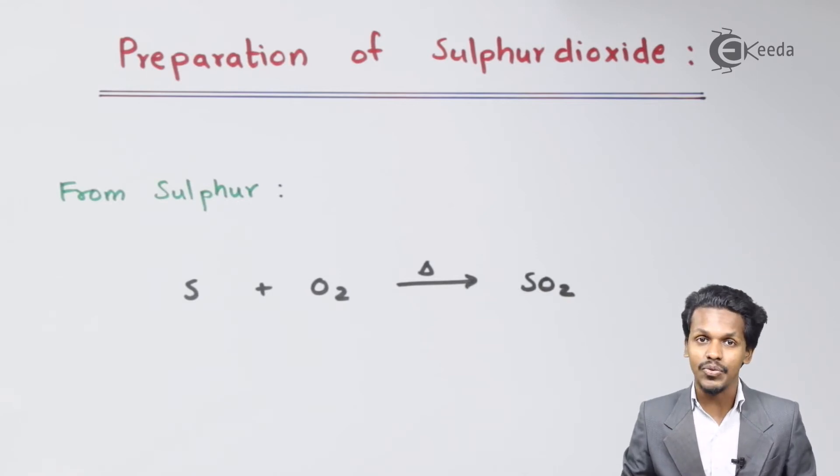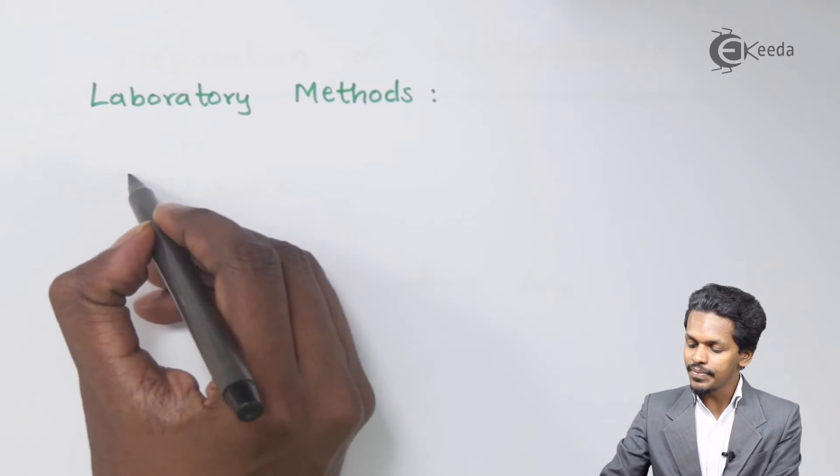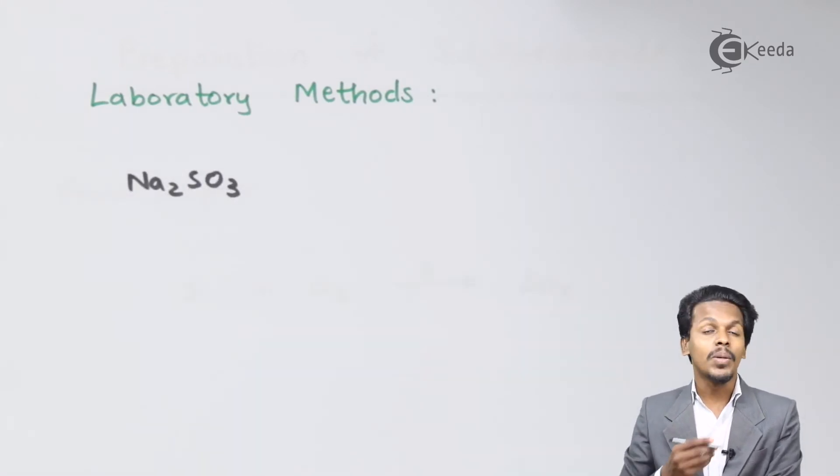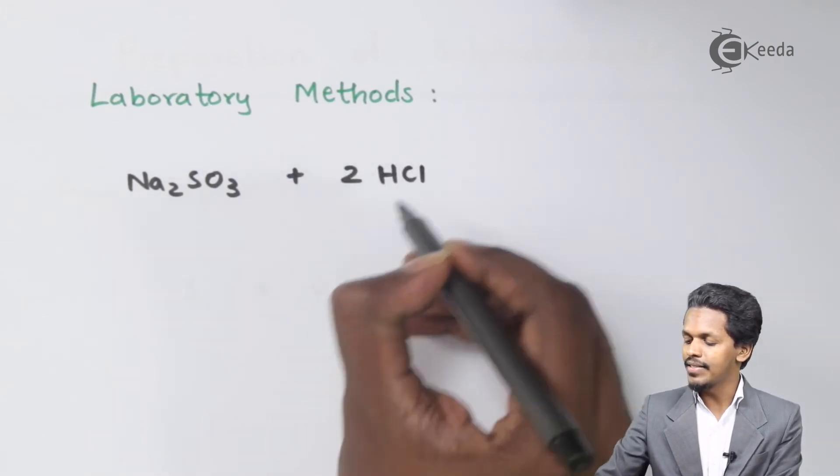Next, we can prepare sulfur dioxide in the laboratory using the laboratory method. We consider Na₂SO₃, which is sodium sulfite, and treat it with a dilute solution of HCl.